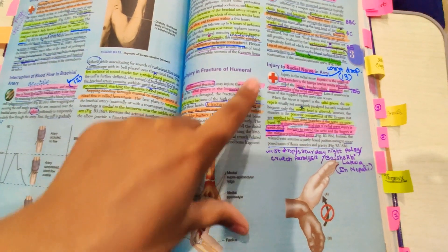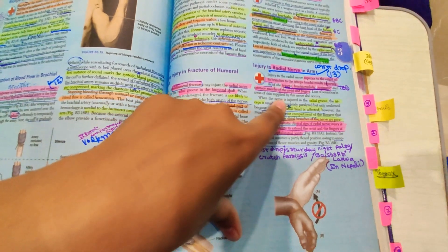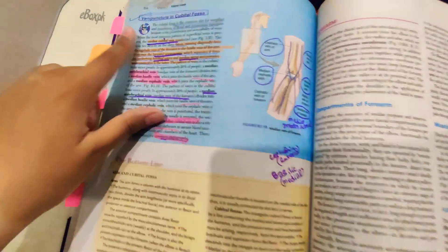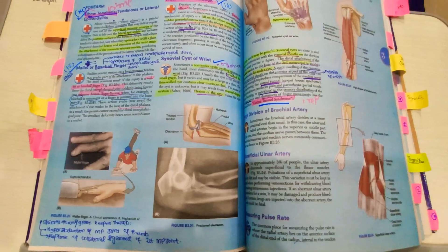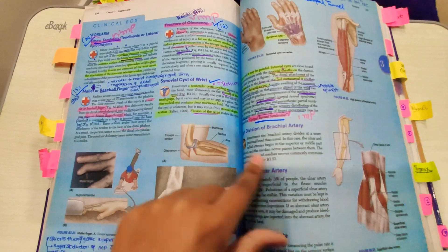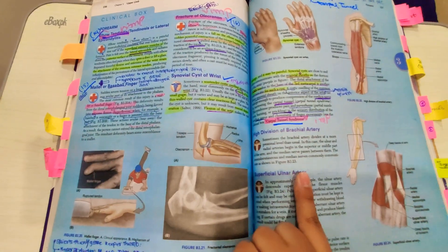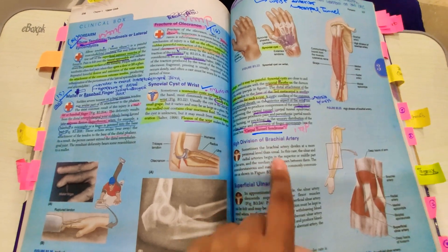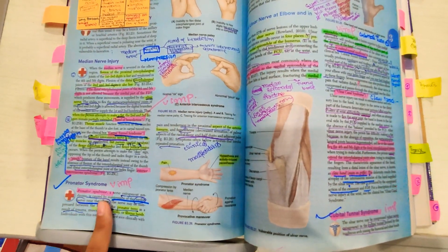Then injury to radial nerve, wrist drop, then venipuncture in cubital fossa. Then you have to do elbow tendinitis, fracture of olecranon, synovial cyst of wrist - it's important - then carpal tunnel syndrome.